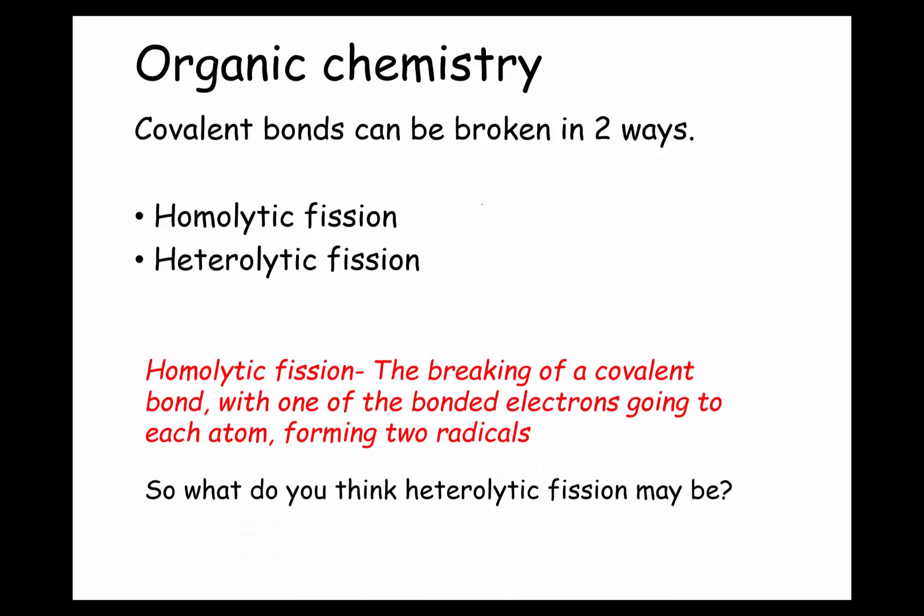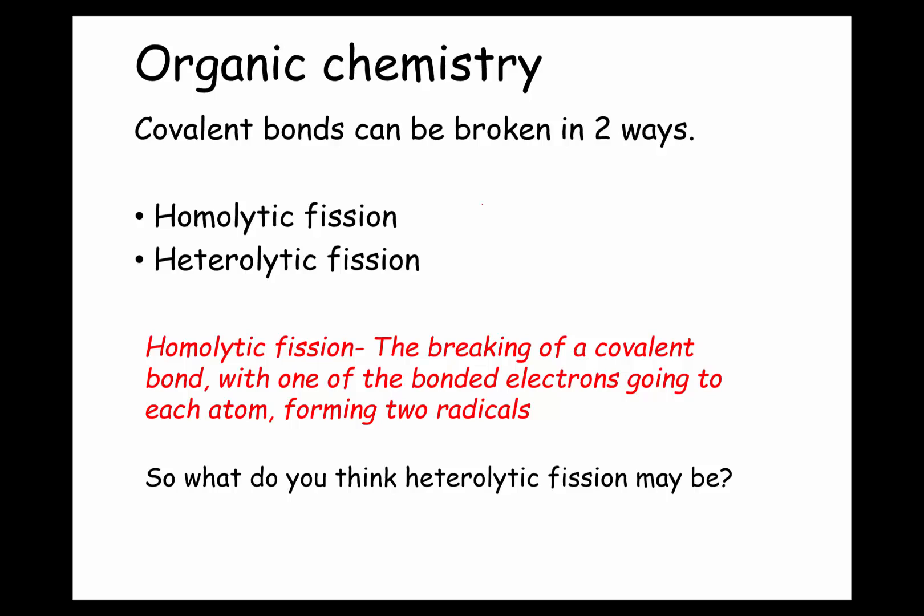So what is homolytic fission? This is the definition that you need to know: it's the breaking of a covalent bond with one of the bonded electrons coming to each atom, forming two radicals. Now that's pretty simple. The one bit that you'll be unfamiliar with at this point is this word 'radicals'. So what is a radical?